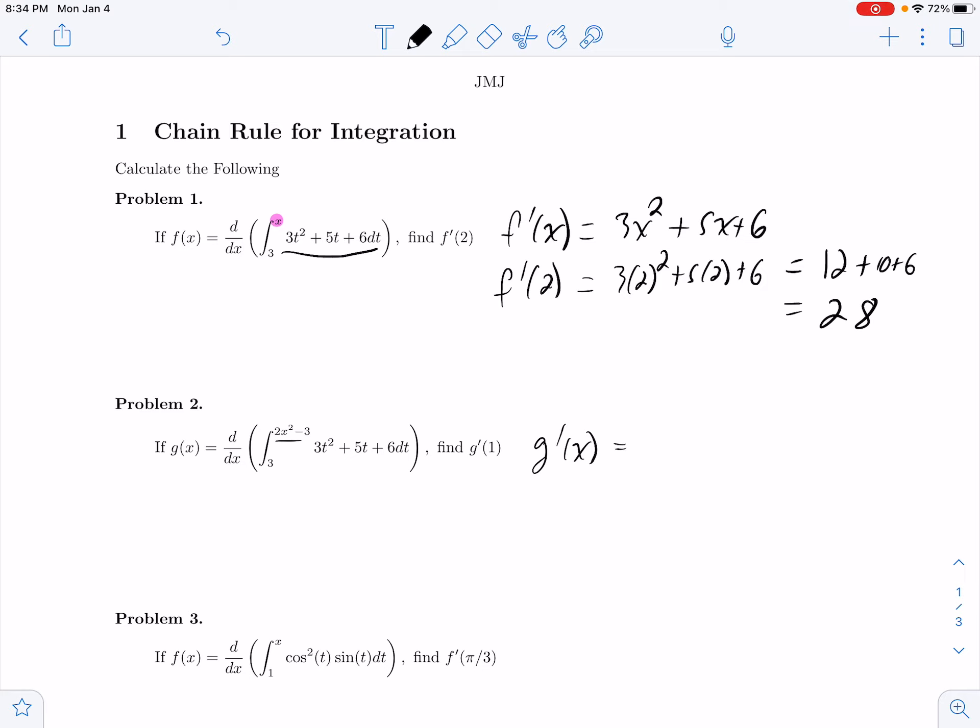What we do is we take this guy with this guy plugged into it, so we're going to get 3 times (2x squared minus 3) squared plus 5 times (2x squared minus 3) plus 6. And then we multiply by the derivative of this guy, which is going to be 4x.